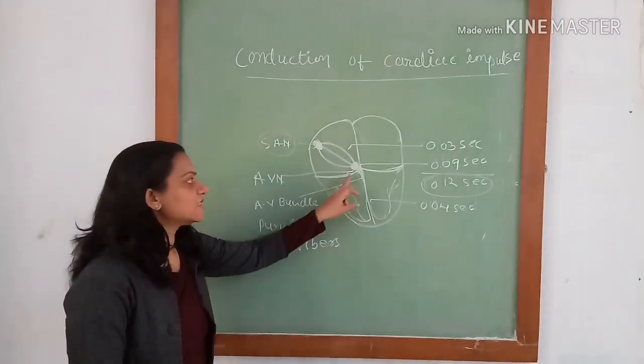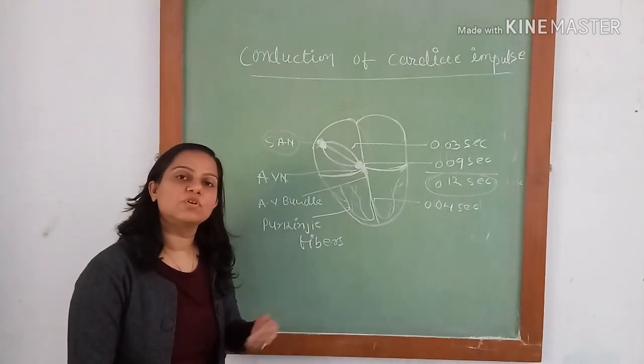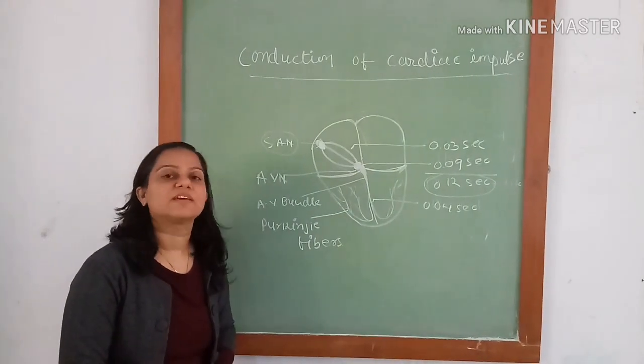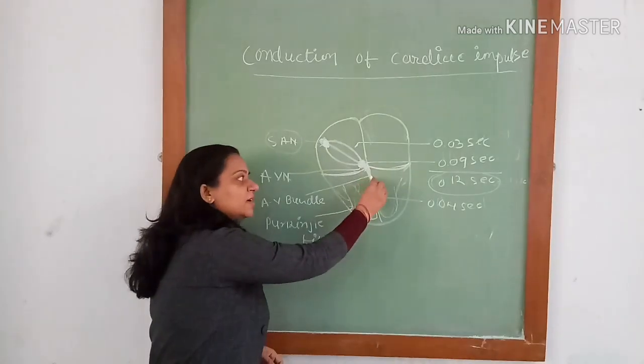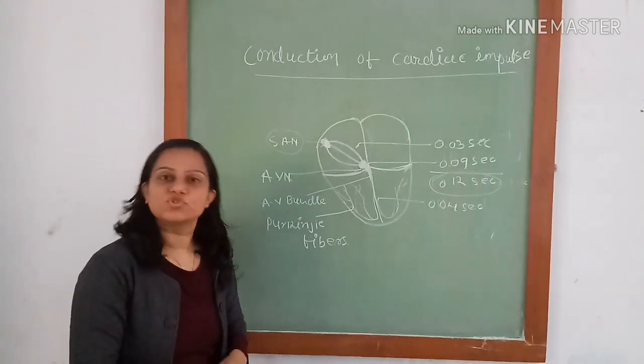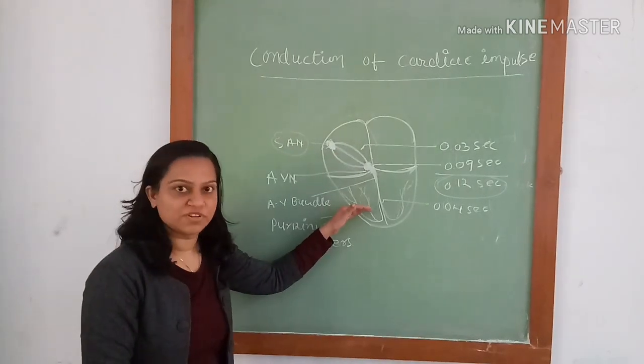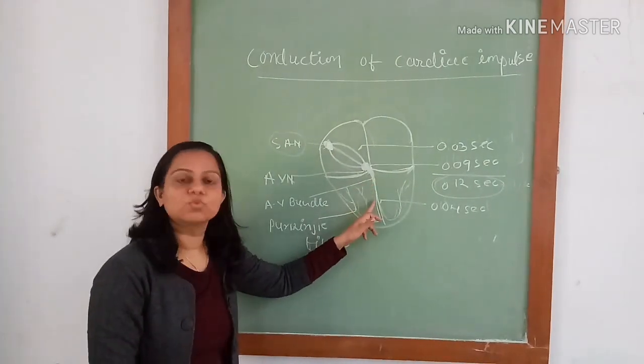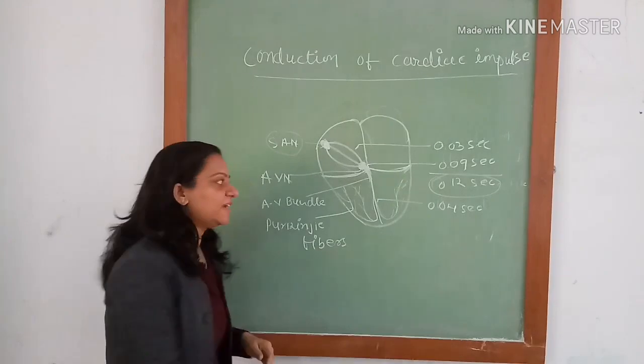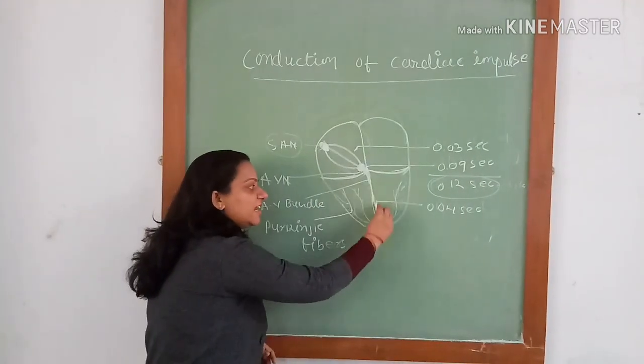AV node is situated in the posterior wall of the right atrium behind the tricuspid valve. AV bundle moves through the penetrating portion of the fibrous tissue separating the atria and ventricle. It runs downward through the interventricular septum and divides into right and left branches.